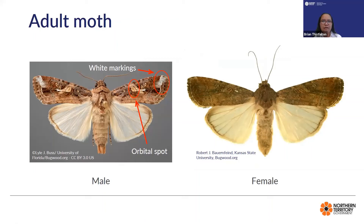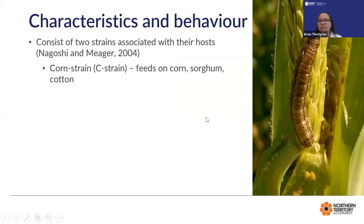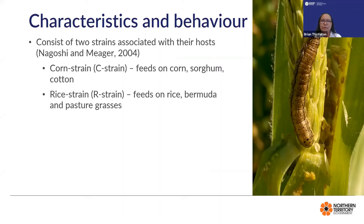Adults are nocturnal and are most active during warm, humid evenings. The duration of adult life ranges from 7 to 21 days and the total development for fall armyworm is from 30 to 90 days. In the field you may also encounter a close relative, the false armyworm, which is usually a bycatch during trapping — you can easily distinguish it because it is larger than fall armyworm and has a bigger fluffy tail. Fall armyworm occurs in two strains that are identical morphologically but differ genetically based on larval host specificity: the corn strain (C-strain) that feeds on corn, sorghum, and cotton, and the rice strain (R-strain) that feeds primarily on rice, bermuda, and pasture grasses.